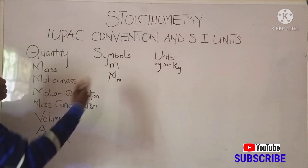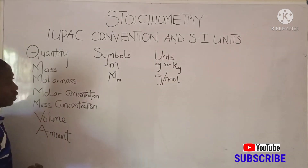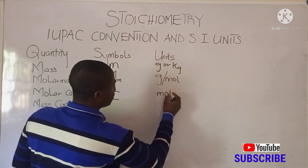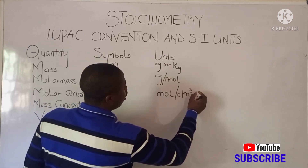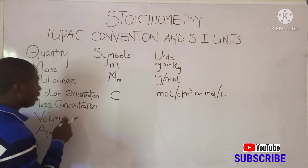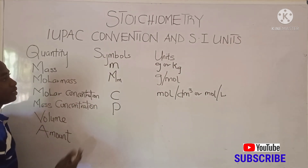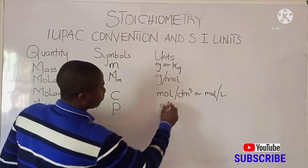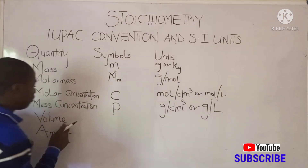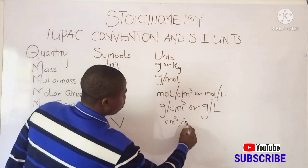The unit of molar mass is grams per mole. For molar concentration, the symbol is C, and the unit is moles per dm³. For mass concentration, the symbol is ρ (rho), and the unit is grams per dm³, or grams per liter. For volume, the symbol is V, and the unit is cm³, m³, or liters.